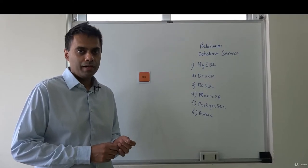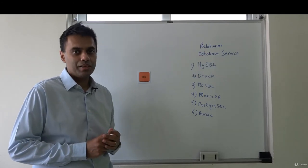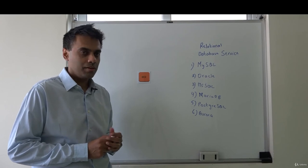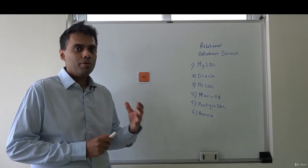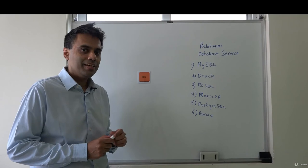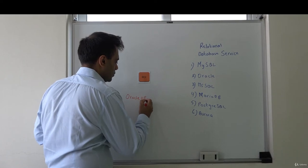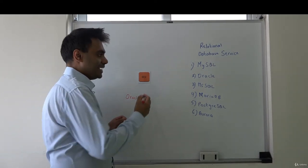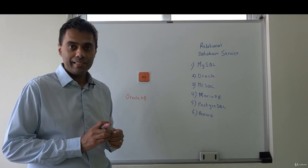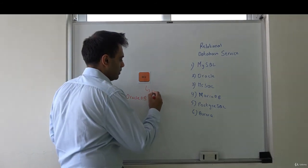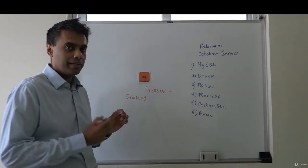Hi and welcome back. Now in this chapter, I want to talk about the Relational Database Service or the RDS service. Before we jump into the relational database service, let me give you a simple scenario. Let's say you want to host an Oracle database. If you want to do this on AWS, what would be the general list of steps? You would probably spin up an EC2 instance, attach some EBS volumes, download and install the Oracle software, do the required configuration, ensure all the log files and data files are in place, and then start using that Oracle software.